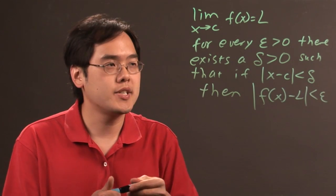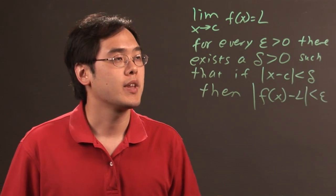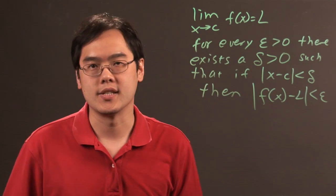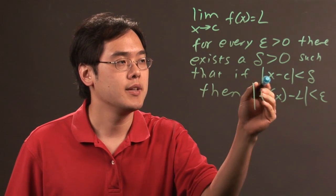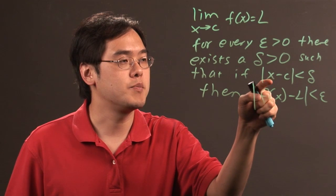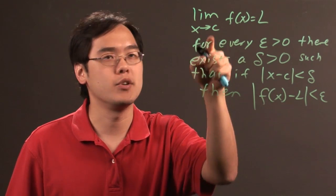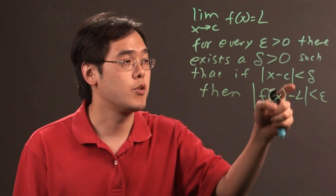Now, what that basically tells you in really as simple terms as possible is that if you have a limit that exists, what that pretty much means is that if the distance between x and that number c is going to be